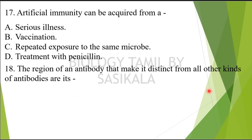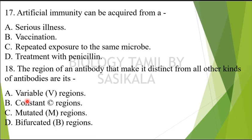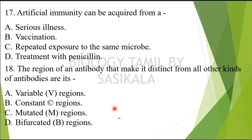Question 17: What is distinct from all other kinds of antibodies — what makes one antibody distinct? The choices in antibody structure are: variable V region, constant C region, mutated M region, bifurcated B region. In the structure, two answers are removed and the balance is the right answer.